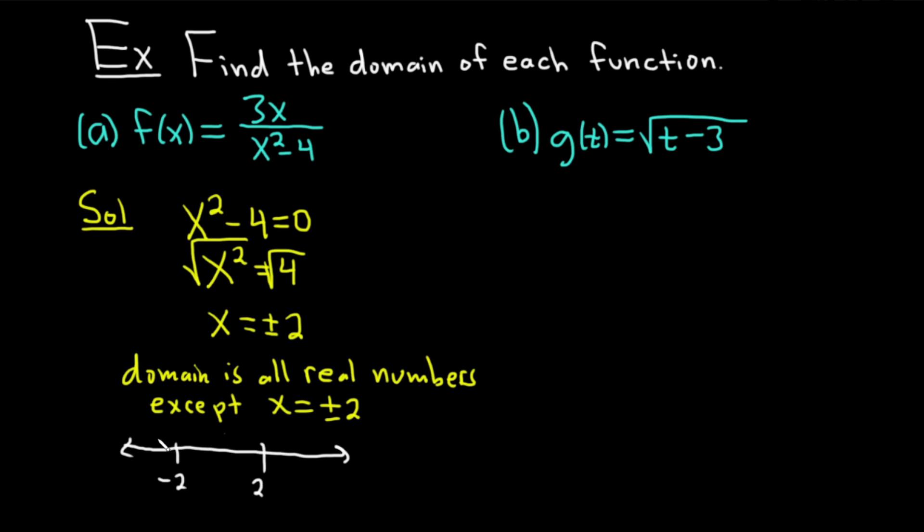And so the domain is everything except negative 2 and 2. And so what you do to exclude these numbers is you put these opposing parentheses like this. And then you can read the answer off the screen. Negative infinity to negative 2, union negative 2 to 2, union and then 2 to infinity. You take the union of all these little intervals. And that gives you the interval notation for the domain.